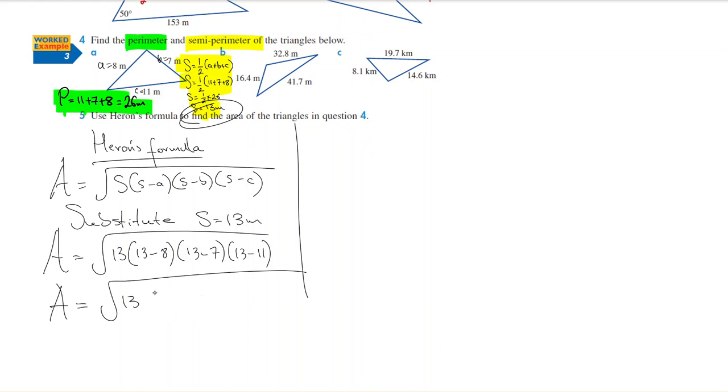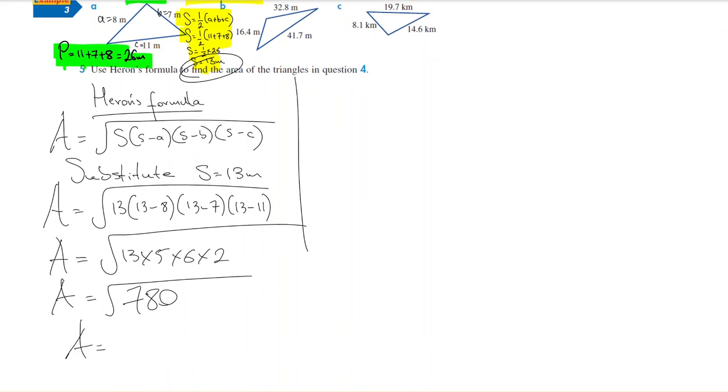13 times 5 times 6 times 2. Simplify this further: 13 times 5 times 6 times 2 is 780. Square root of 780 is...